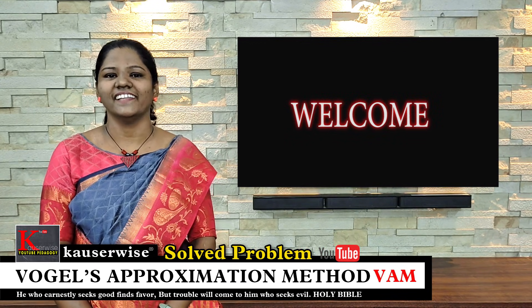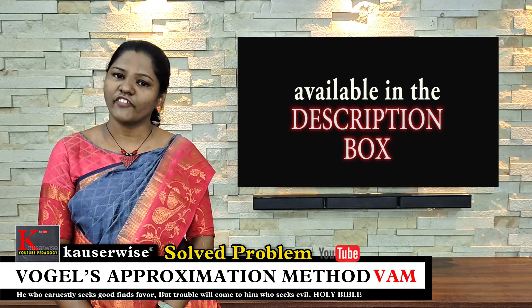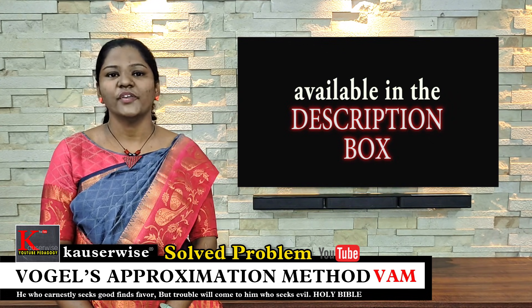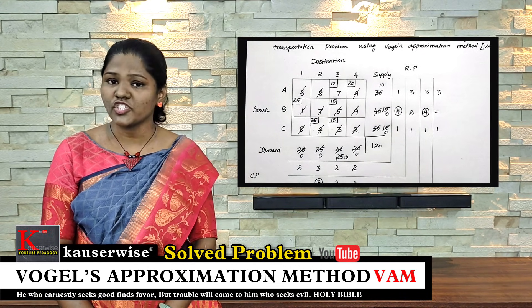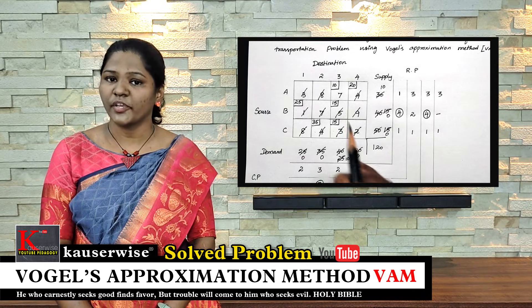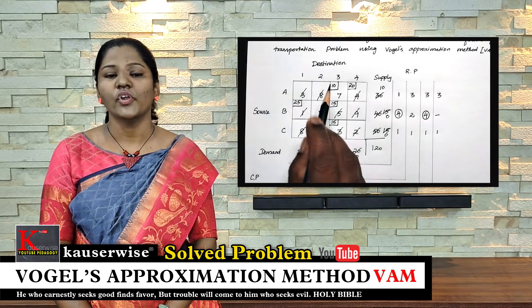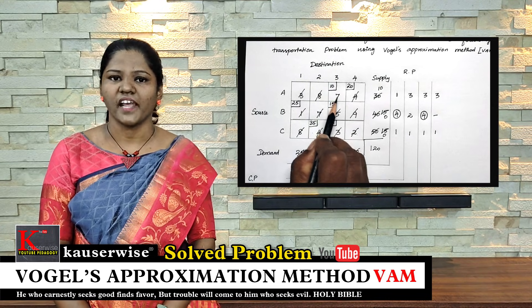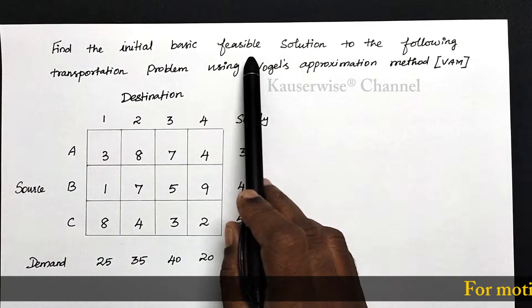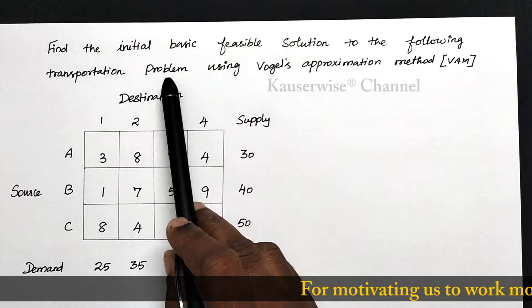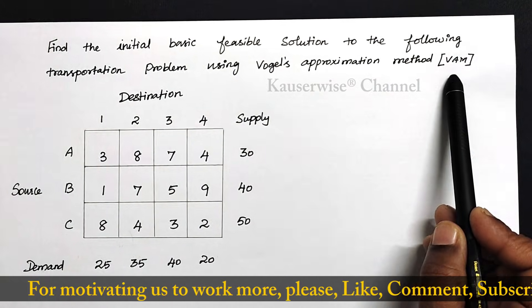Hi, welcome to Cousalwise channel. This is the continuation video of transportation problem. I have already uploaded a list of videos on this topic — you can find the links in the description box. In this video, we are going to see how to solve a transportation problem using the VAM method in case of a tie. Please watch the complete video to get clarity. Now let's get into the video. Find the initial basic feasible solution to the following transportation problem using Vogel's approximation method, that is, VAM method.